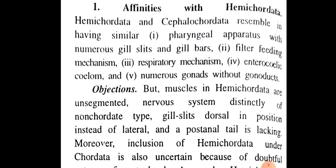Affinities with Hemichordata. Hemichordata and Cephalochordata resemble in having: (1) pharyngeal apparatus with numerous gill slits and gill bars, (2) filter feeding mechanism, (3) respiratory mechanism, (4) enterocoelic coelom, (5) numerous gonads without gonoducts.